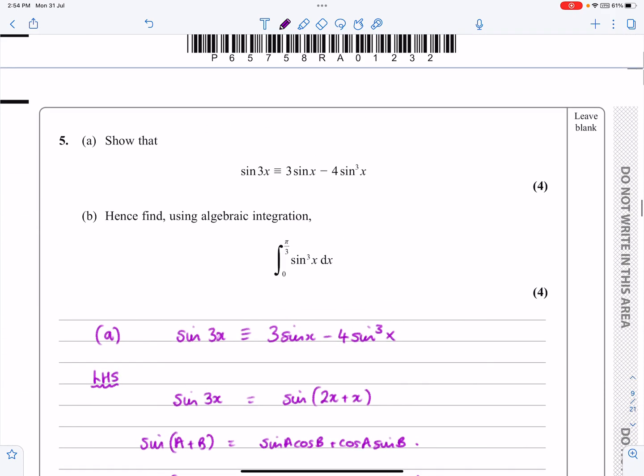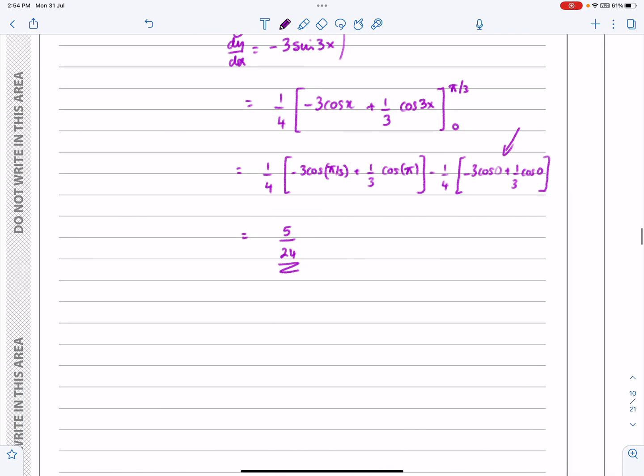And then if you do put all those values in, it actually comes out to be 5 over 24 as the final answer. Use your calculator to do that. It works out to be an exact value there, 5 over 24. Okay, hopefully that makes sense.